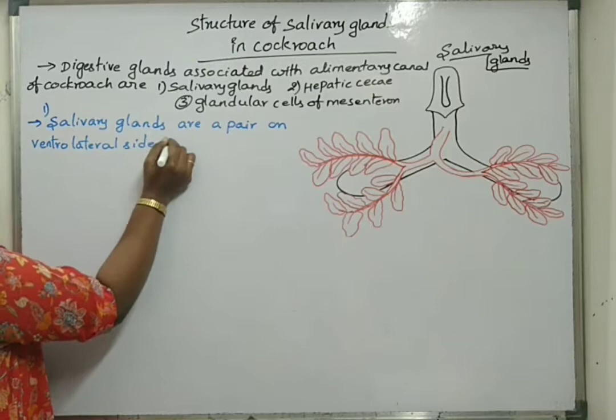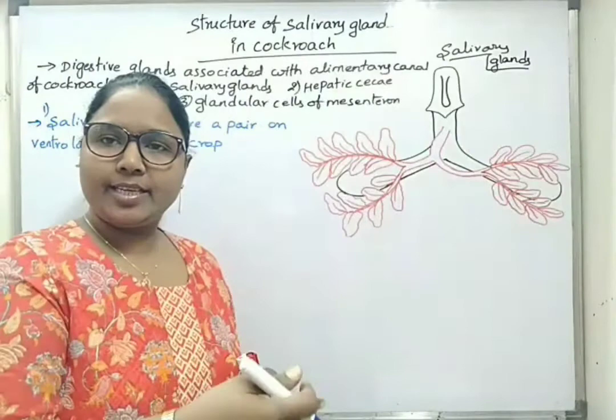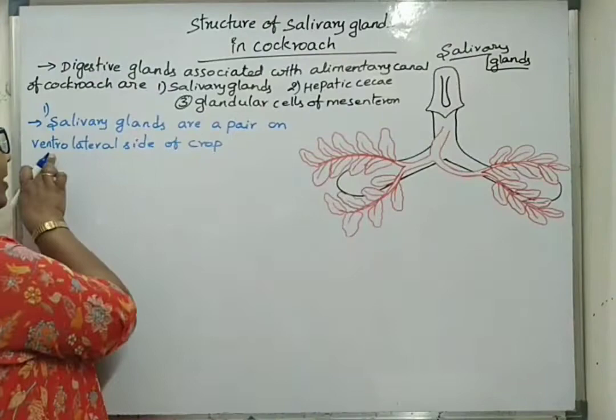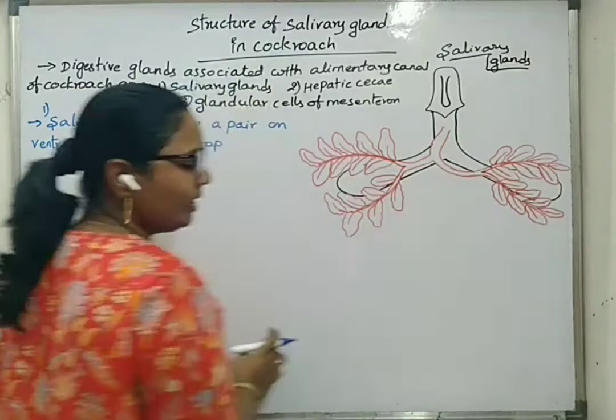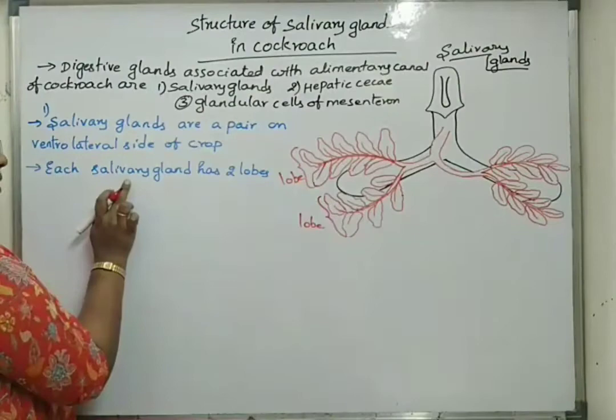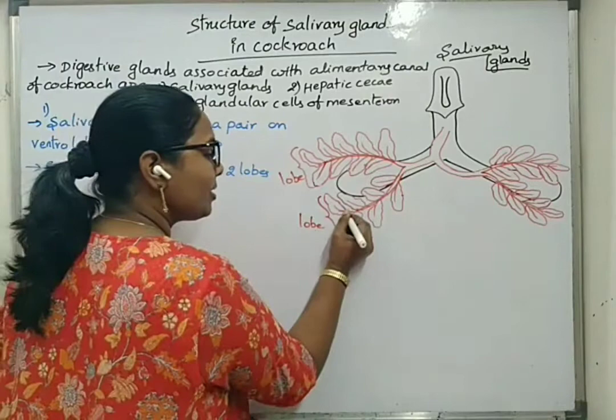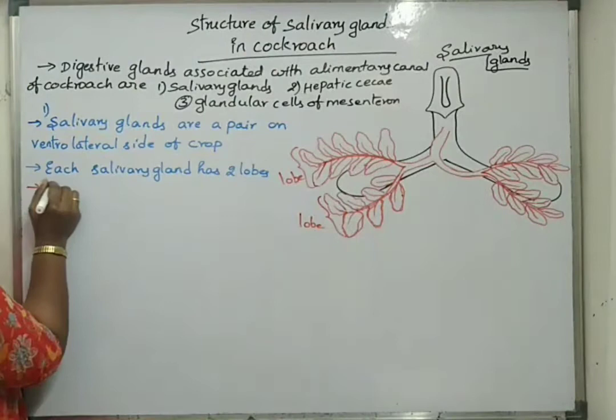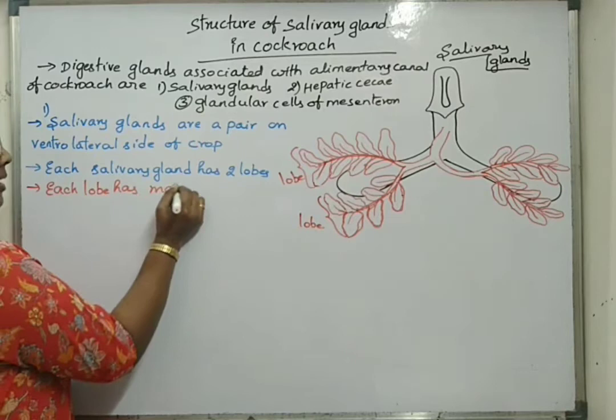In the alimentary canal, after pharynx and esophagus, there is a big sac-like structure called the crop. On the ventral and lateral side of the crop, on either side, there is a pair of salivary glands. Each salivary gland has two lobes — one lobe and a second lobe. Each lobe has many lobules.